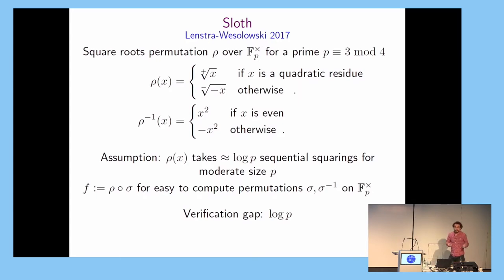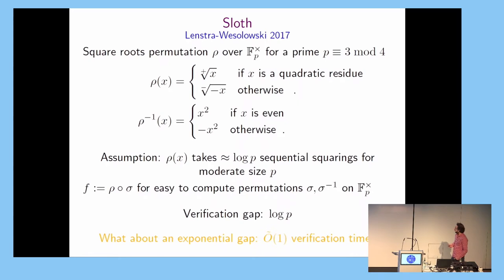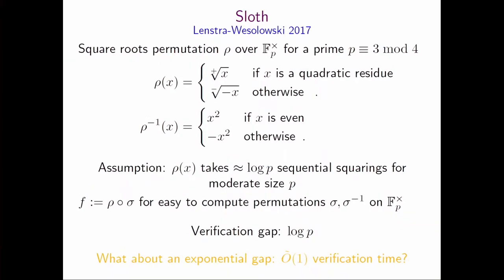The assumption is that computing square roots in such groups takes roughly log b sequential squarings. If that's the case, the verifier gains a log b speedup by verifying in the backward direction. Log b in practice would be about a thousand — that's great, and they actually instantiate this function to do interesting stuff. But this is not what we actually hope for. We hope for verification time that is fully logarithmic and practically deployable.